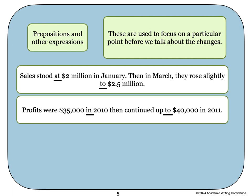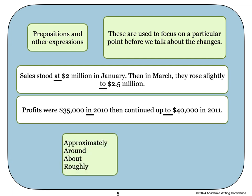We can also use words such as approximately, around, about, roughly, or more or less, nearly, or almost, to describe information as well. All of these words can be used to help describe information in a graph or a chart.